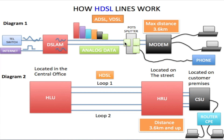When these two signals are received by the POTS splitter, the splitter would only allow the internet signal to go through to the modem and the voice signal to go through to the phone. When the modem receives the internet signal, it is a modulated signal, so the modem demodulates that signal, converts it to digital, and then sends it off to the local area network.